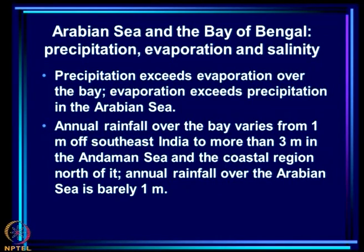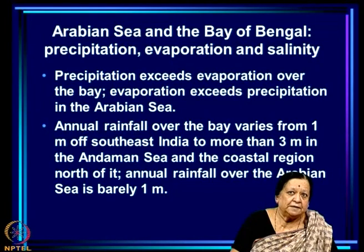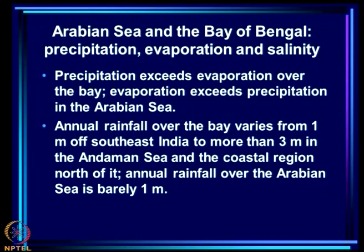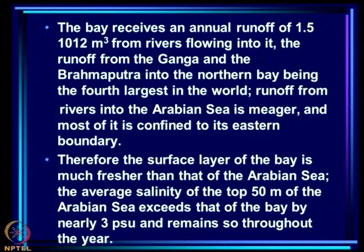Now let us look at other facets — namely precipitation, evaporation, and salinity. Precipitation exceeds evaporation over the Bay, and evaporation exceeds precipitation in the Arabian Sea. Annual rainfall over the Bay varies from 1 meter off southeast India to more than 3 meters in the Andaman Sea, while annual rainfall over the Arabian Sea is barely 1 meter. In addition, the Bay receives an annual runoff of 1.5 × 10¹² cubic meters from rivers, with the Ganga-Brahmaputra runoff into the northern Bay being the fourth largest in the world.